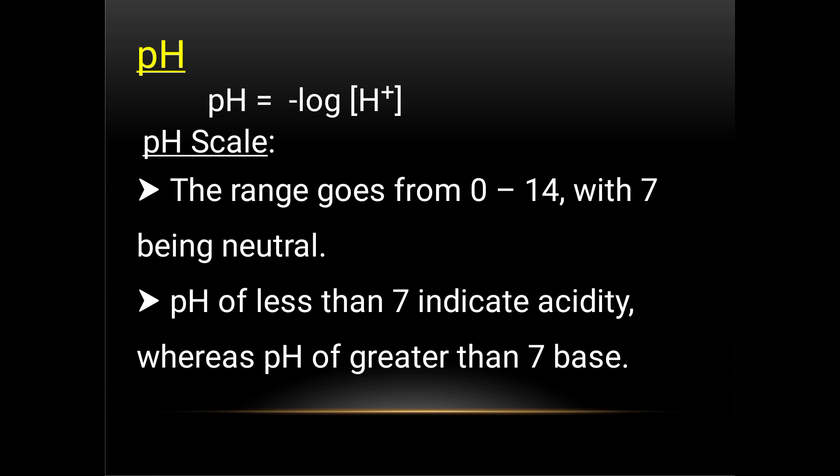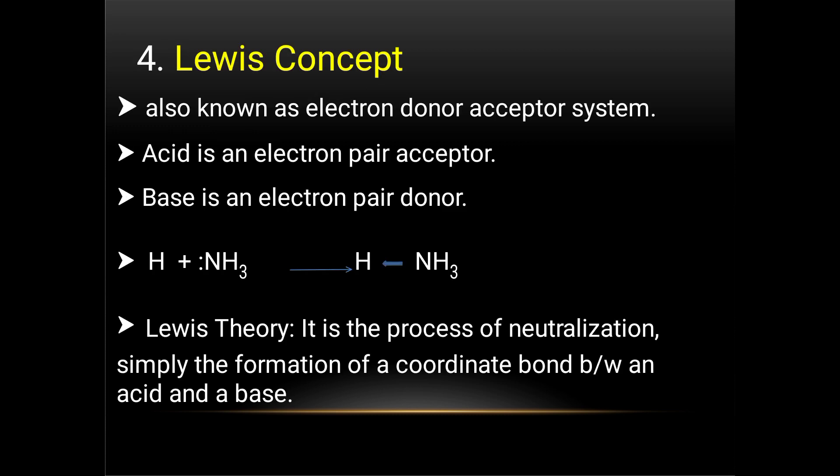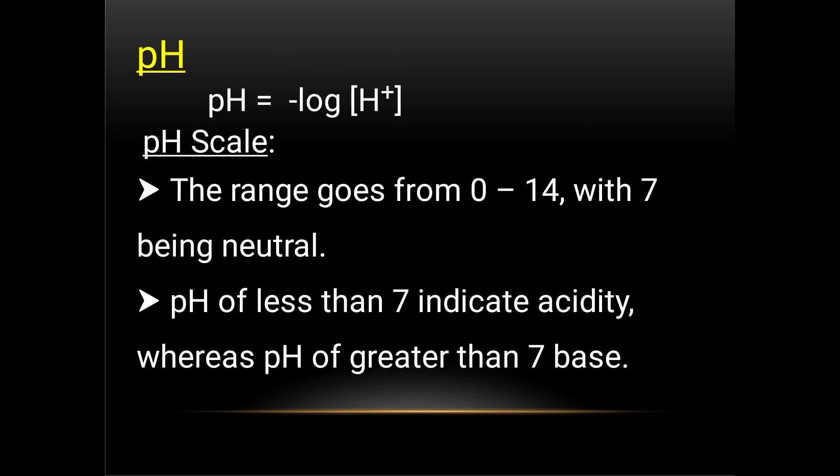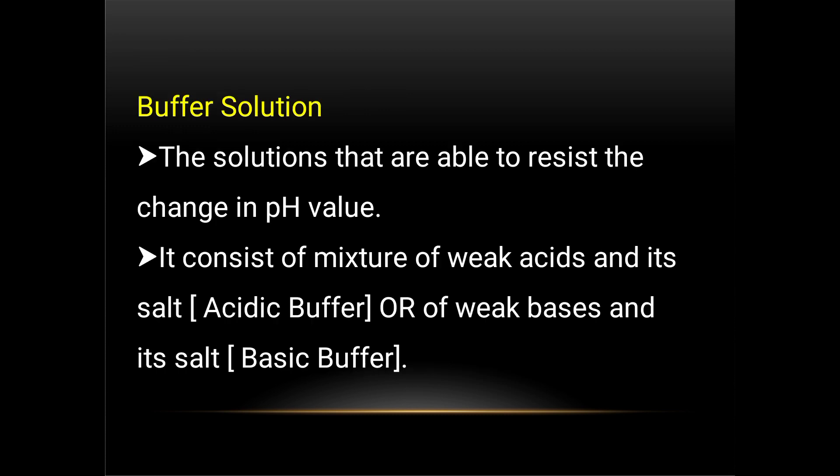pH is measured using the pH scale, which ranges from 0 to 14 based on H+ ion concentration, with 7 being neutral. A pH less than 7 indicates acidity, whereas a pH greater than 7 indicates a base.